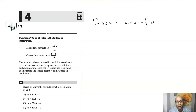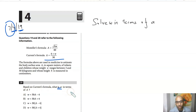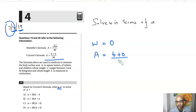In this example from the seventh test, section 4, problem 19, you're given a formula and asked to find the inverse formula — in other words, what is w in terms of a. All you have to do is set w equal to 0. Once you do that, you get a equal to 4 plus 0 divided by 30, so a is 4/30.